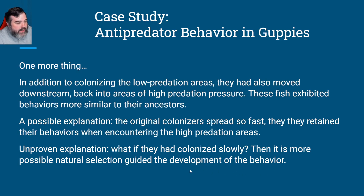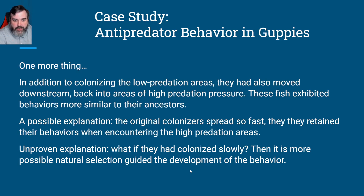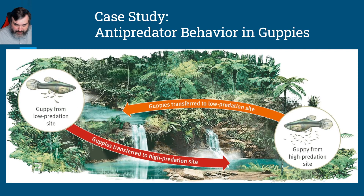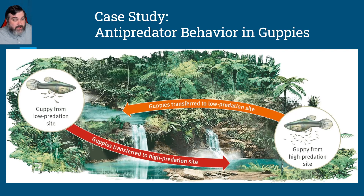The idea is that maybe the colonizers spread so fast that they retained their high-predation behaviors when encountering the high predation areas again. But the question is: what if they colonized very slowly? Would there have been enough generations that maybe they would have forgotten the behaviors that had made them successful in the previous high predation area? It's interesting to see how their environment plays a role as they move from one place to another. We'll stop the video here and continue after the break.